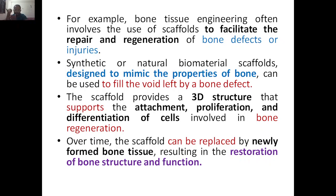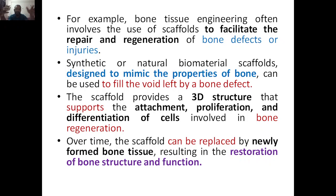The scaffold provides a 3D structure that supports the attachment, proliferation, and differentiation of cells involved in bone regeneration — just as we discussed in the context of muscles. Cells will come, attach, proliferate by dividing, then differentiate, and finally give you the tissue. Once this process is complete, the new bone will be formed. Over time, the scaffold can be replaced by newly formed bone tissue, since the scaffold is biodegradable and automatically degrades.